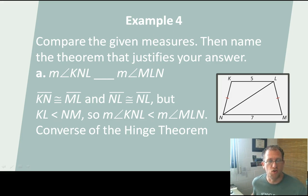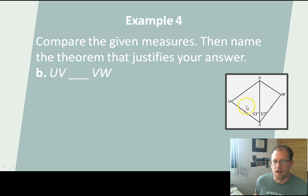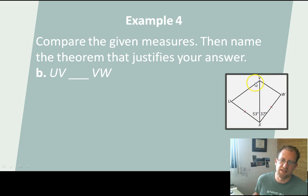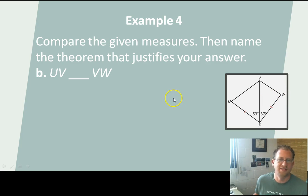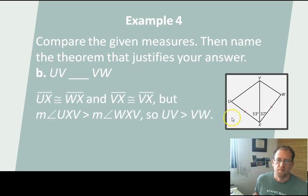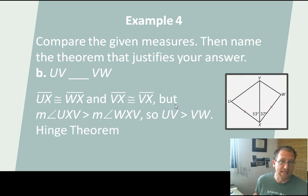Let's do that one more time. Here I have a kite figure, and I know that this side is congruent to this side, marked that way in the diagram, and I know that this segment is equal to itself by the reflexive property of equality. So this angle being bigger than this angle, I then know that this side — the third side of this triangle — should be greater than the third side of this triangle. So UV is greater than VW, because the included angle opposite UV is bigger than the included angle opposite VW. And that is the hinge theorem.